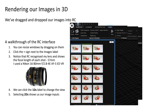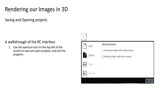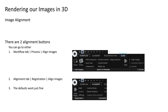If you want to save or open projects, click the logo button at the top left. You can also quit RC from here by clicking exit. The first step after adding your inputs is alignment. There are two places you can begin alignment from: you can go to the Workflow tab, Process, and click Align Images — or go to the Alignment tab, Registration, and select the Play button marked Align Images.